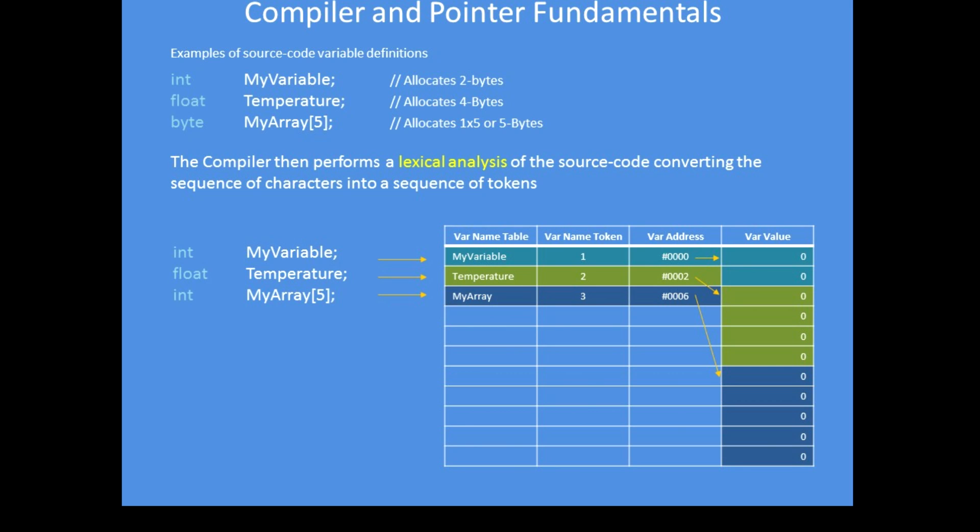For my_variable, it assigns a token, an address, and a value — though the value hasn't been assigned just yet. Because it's an integer variable on Arduino, it assigns two bytes. For the temperature variable it gives it the next token number, increments the address, and allocates four bytes. For the byte array it allocates five bytes, incrementing the pointers as it goes. That's the lexical analysis stage of the compiler.